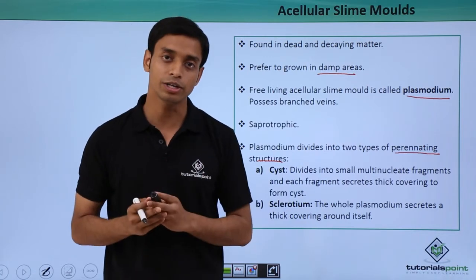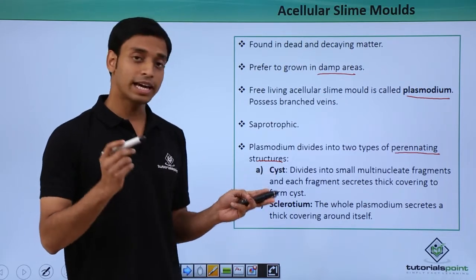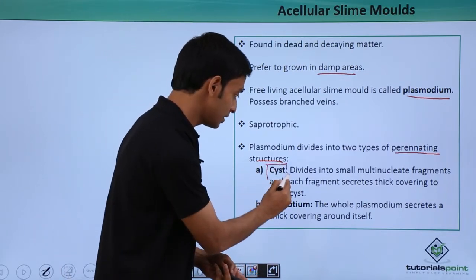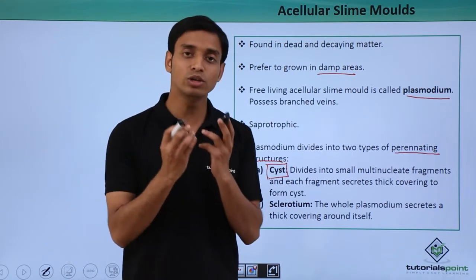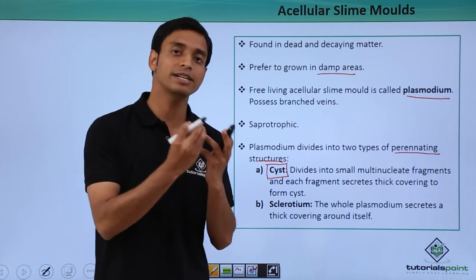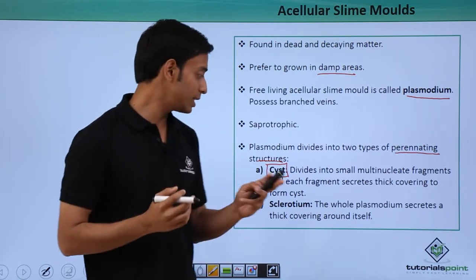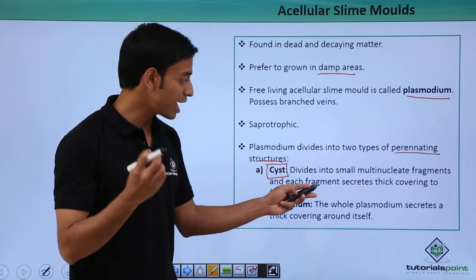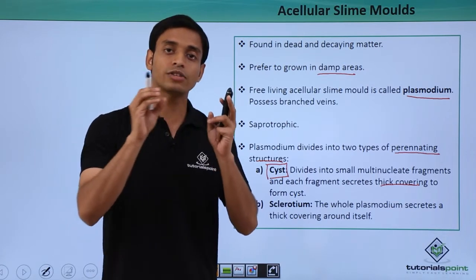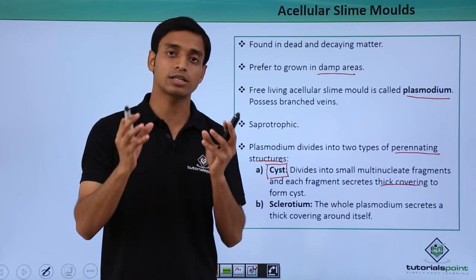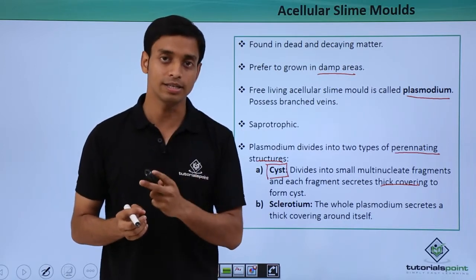This can happen in two ways. First, they can form cysts. The plasmodium divides into small multi-nucleated fragments — fragments with more than one nucleus. Each of these fragments then secretes a thick, protective covering around itself, and each of these is known as a cyst.